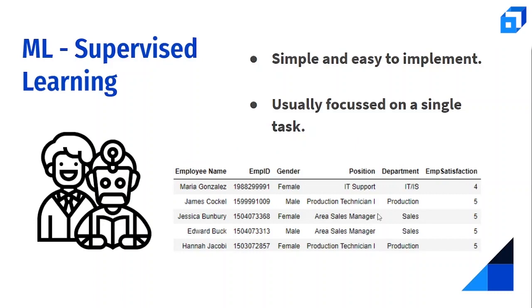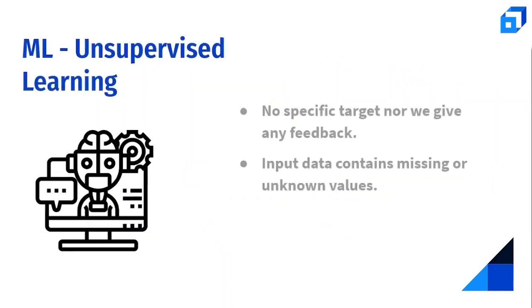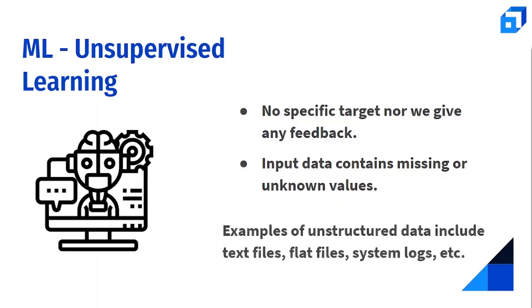Unsupervised learning is at the opposite end from supervised learning. Here, no specific target is given to the model and no feedback is provided — the machine has to find a way to learn by itself. Input data is usually in the form of unlabeled or unstructured data, which basically contains missing values or unknown data, such as text files, flat files, and system logs.